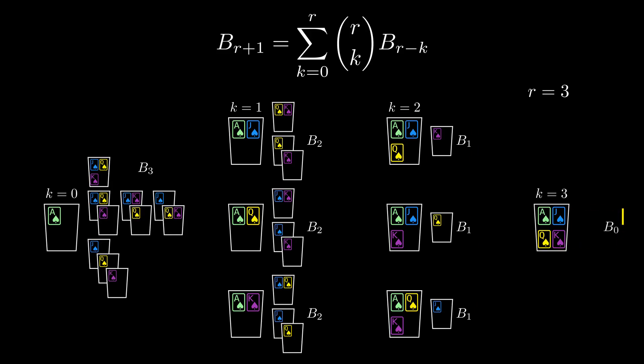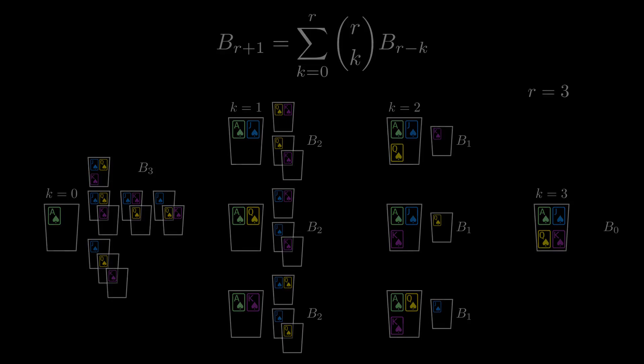Don't forget that b sub 0 is 1. There's one way of putting no prizes into bags. Don't touch prizes or bags. That, perhaps vacuously, counts as a prize bagging. Summing over all possible values of k gives the right hand side. That wasn't so bad.